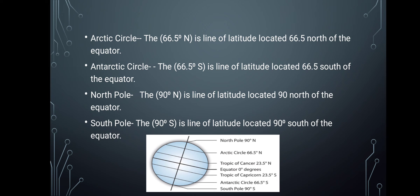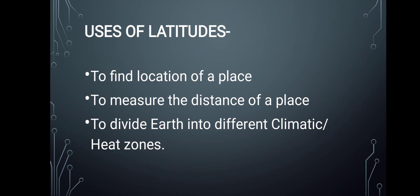Using these important lines, the earth is divided into three major heat zones. The uses of latitude include: first, to find the location of a place — latitude and longitude together play very important roles in identifying the location of a place, such as Lucknow, Sitapur, or Delhi. Second, to measure the distance between two places. Third, to divide the earth into different climatic zones.